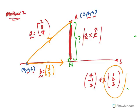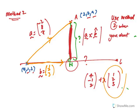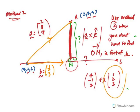So when do we use Method 1 versus Method 2? Method 2 does not require you to find N — the foot of the perpendicular. You can use Method 2 when the question does not require you to find the foot of the perpendicular. For example, in your BMQ question 11, there's no need to find the foot.